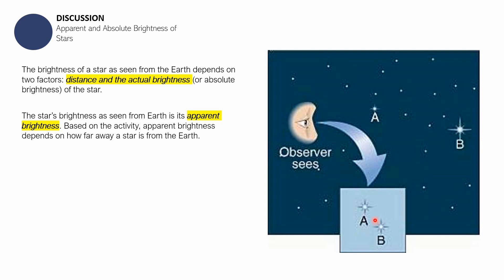Actually, if you're gonna talk about their actual brightness, star B is supposed to be brighter compared to star A. Yun nga lang, yung apparent brightness nila, yung observed brightness nila, pareho lang.